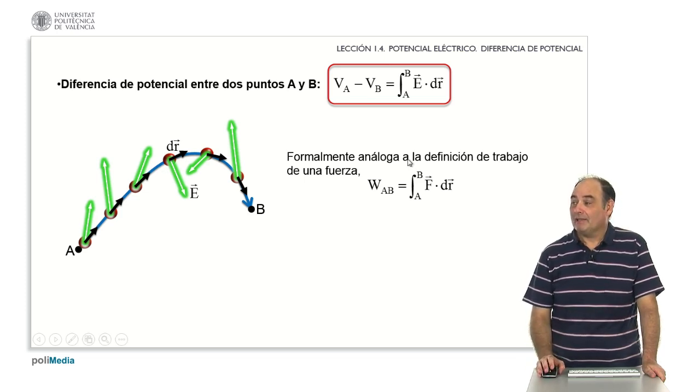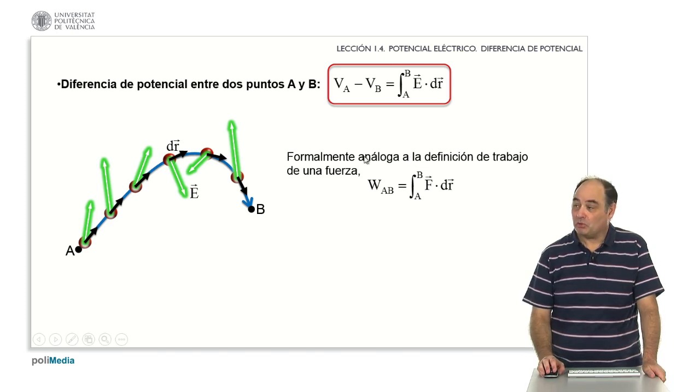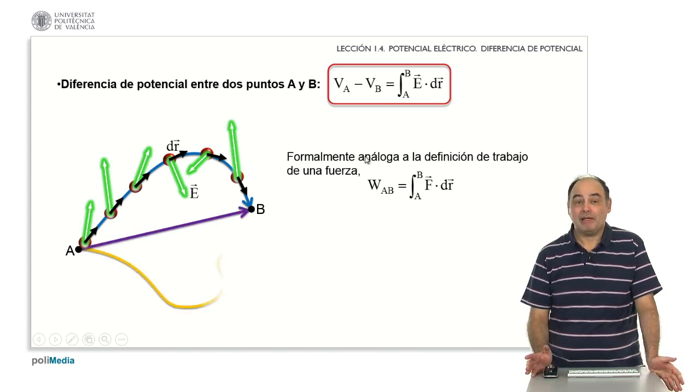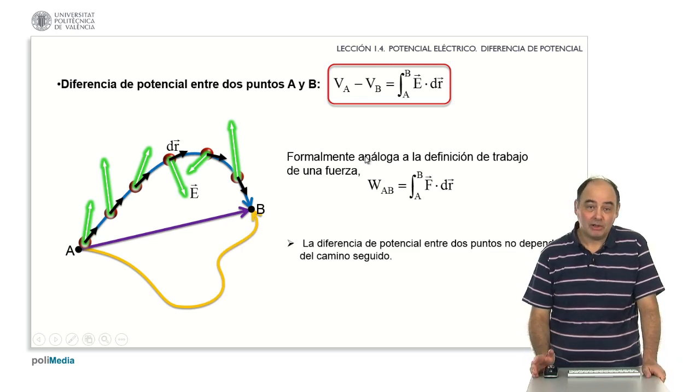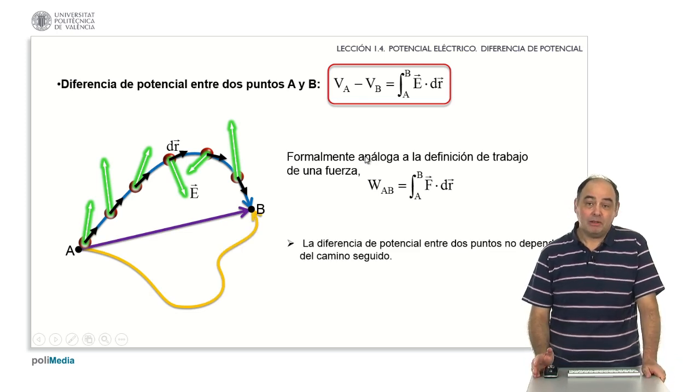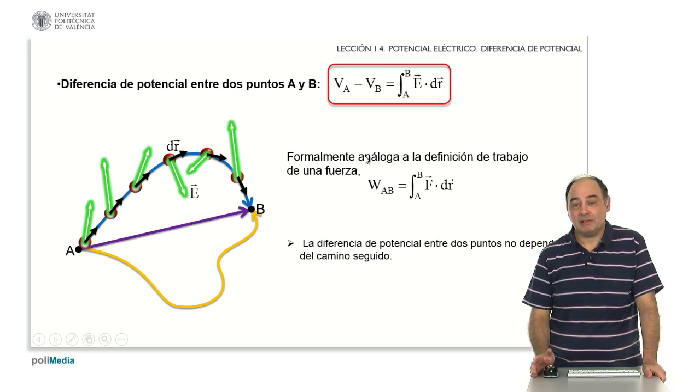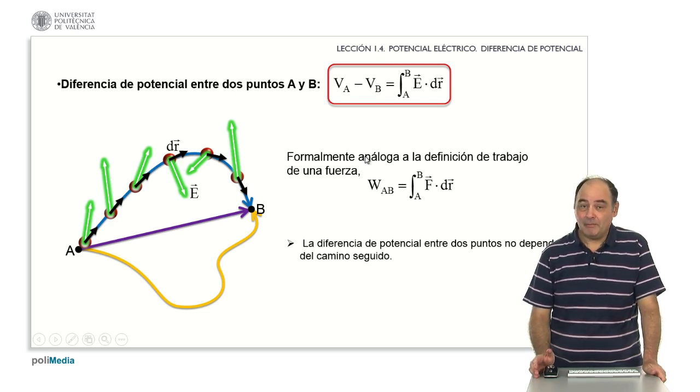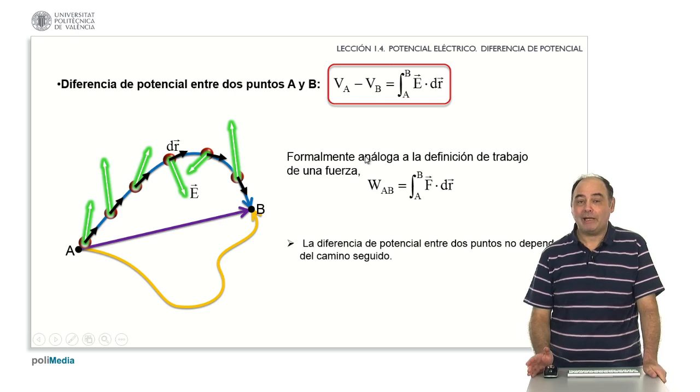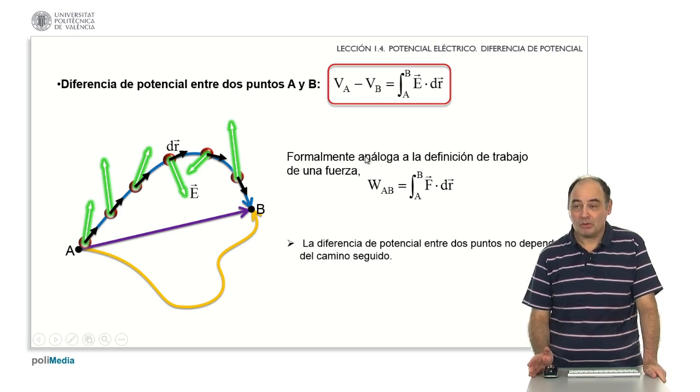Another important detail is what happens if we change the curve. For example, instead of using the one that is marked in dark blue on the screen, we used a straight line or another one that we see in orange. There is a demonstration that exceeds the limits of this course that allows us to justify that the potential difference does not depend on the path. It simply depends on which point to which point we go, not where we go.